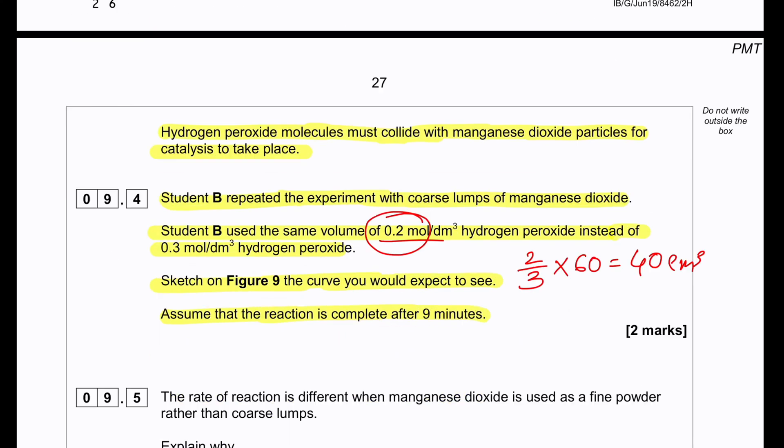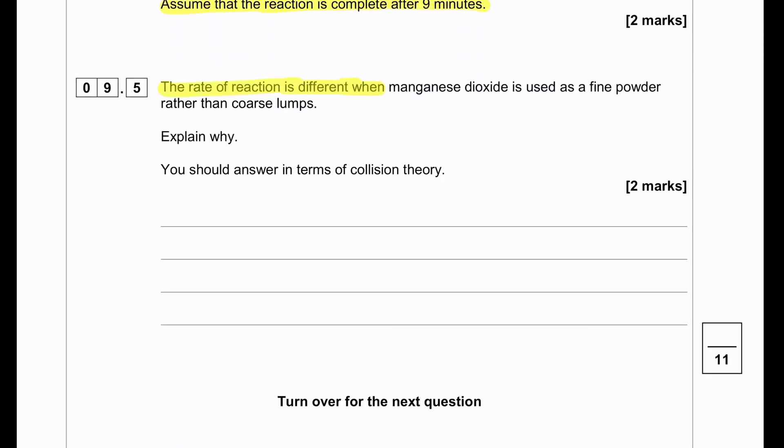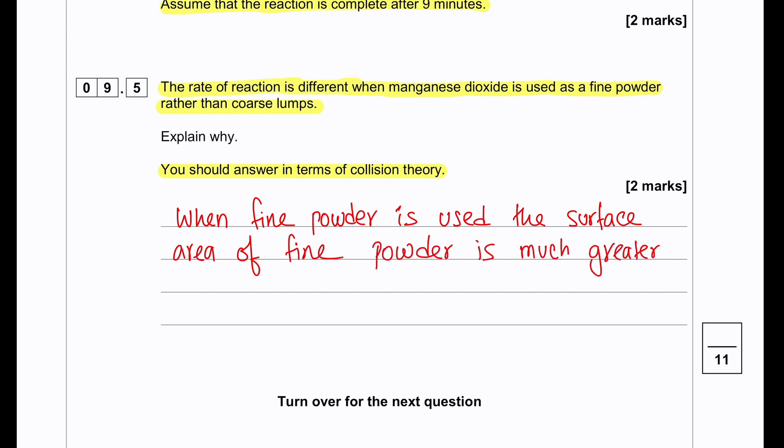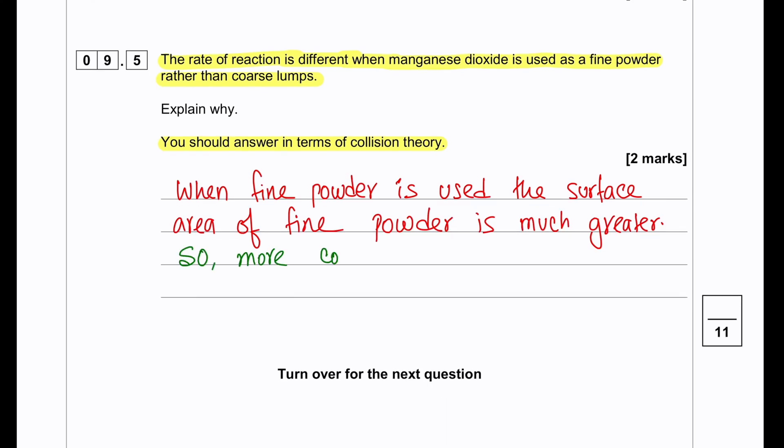The rate of reaction is different when manganese dioxide is used as a fine powder rather than coarse lumps. Explain why in terms of collision theory. When we use fine powder, the surface area of the fine powder of manganese dioxide is much greater, so more collisions of hydrogen peroxide molecules occur per unit time at higher surface area.